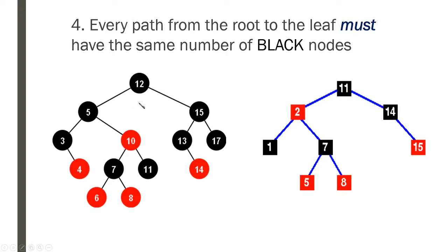For example, going from node 12 to node 4, we count three black nodes. Checking all six paths — to 6, and the others — each has three black nodes. So this is a valid red-black tree. In the second example it's similar: every path from root to leaf encounters the same number of black nodes.